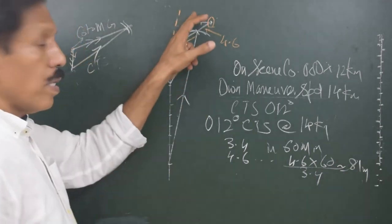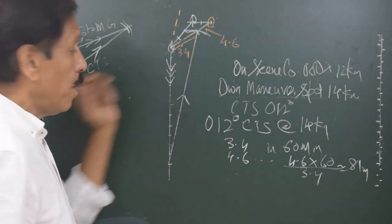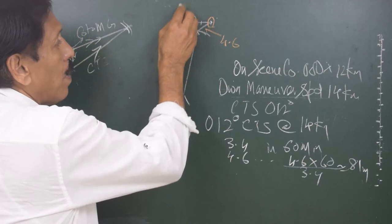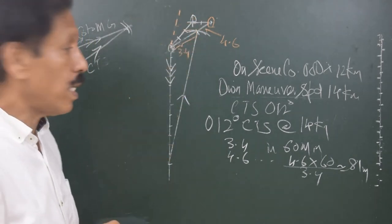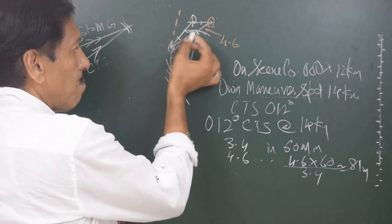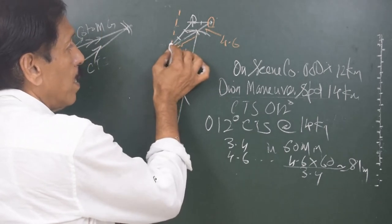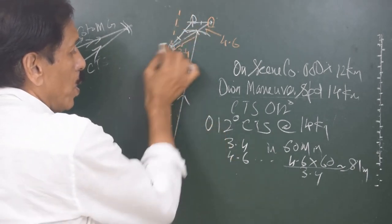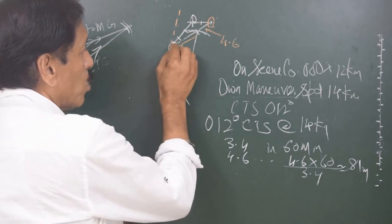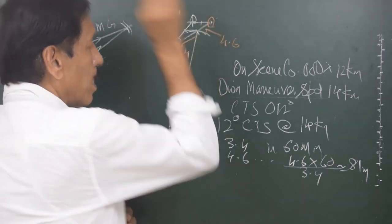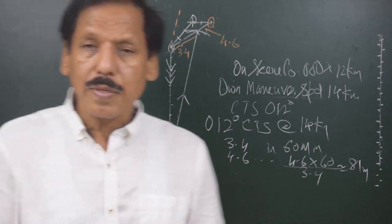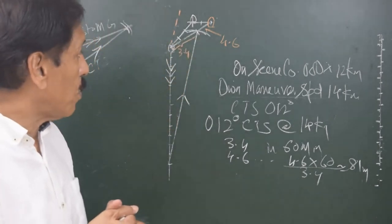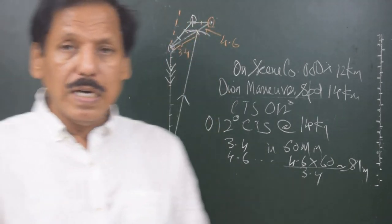That calculation gives approximately 81 minutes. So in 81 minutes I will reach the target position. Mind you, the coordinator is here and you are here, and you are going to steer this course. Apparently you might think you would hit the on-scene coordinator, but that does not happen — you will have safe clearance. What actually happens is: heading 012 and steaming at 14 knots, you make good the CMG line and reach the required position. So on a course of 012 at 14 knots, I will reach this point after 81 minutes.